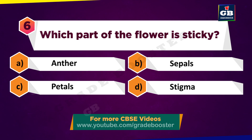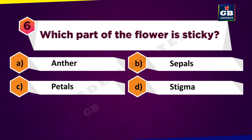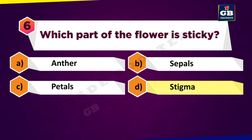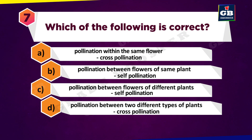Which part of the flower is sticky? A: Anther. B: Sepals. Which of the following is correct? A: Pollination within the same flower — cross-pollination. B: Pollination between flowers of the same plant — self-pollination. C: Pollination between flowers of different plants — self-pollination. D: Pollination between two different types of plants — cross-pollination.